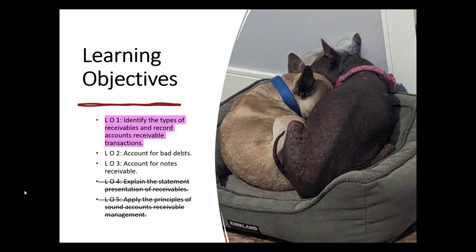Those two little pups snuggling up in the Costco doggy bed — that's probably just big enough for one of them — those are my pups. Bambi is the naked one; she is a Chinese Crested, and Guinness is a little fallen French bulldog. They love each other very much. At least in my humble and biased opinion.